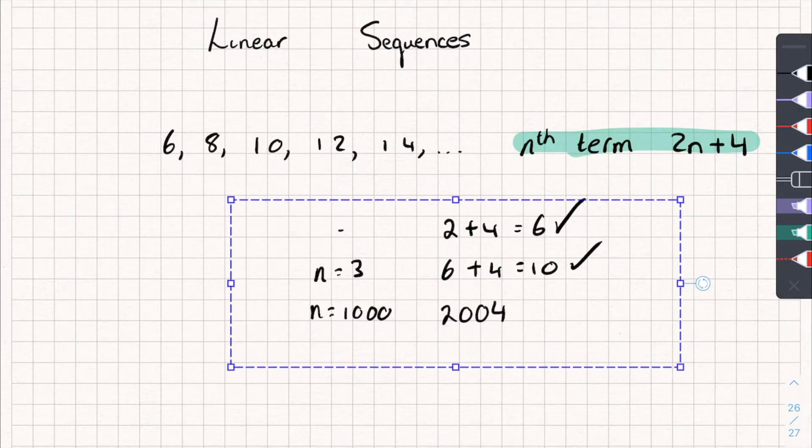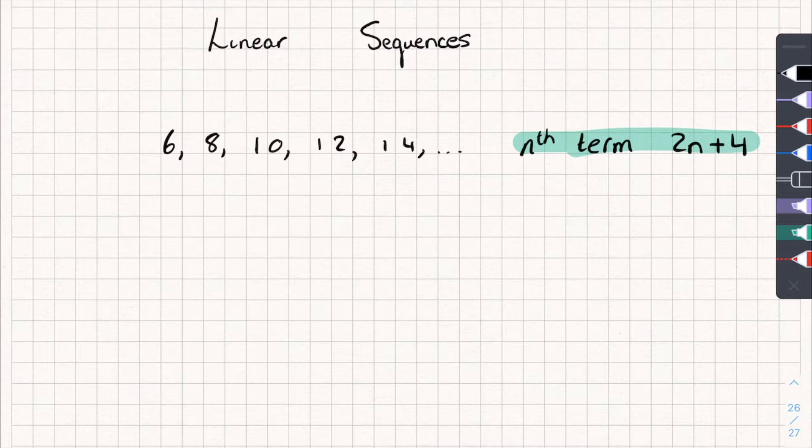So let me get rid of this, and I'll show you how we can work out the nth term if it's not given to us. The first step is to find the common difference. So let's have a look at this one. It goes plus 2, plus 2, plus 2. You can see it's always plus 2.